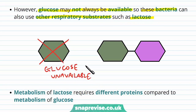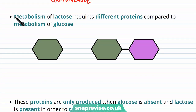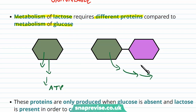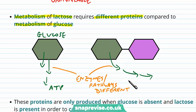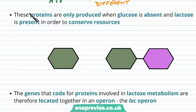If glucose is unavailable, E. coli bacteria tends to use another sugar which is lactose, and lactose is a disaccharide of glucose and galactose. If they're carrying out metabolism of lactose, it requires different proteins and enzymes compared to when they use glucose in metabolism. Both glucose and lactose are used in respiration to make ATP, but since glucose and lactose are different molecules, the enzymes needed for lactose are different to those used for glucose. So the proteins that need to be transcribed and made for lactose metabolism are different to those which need to be made for glucose metabolism.